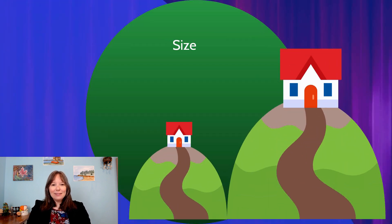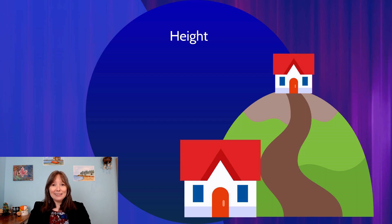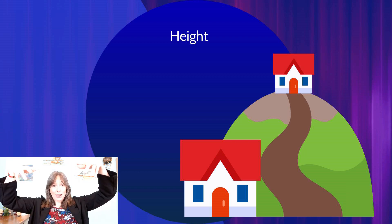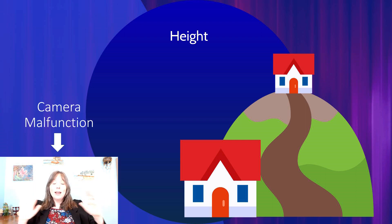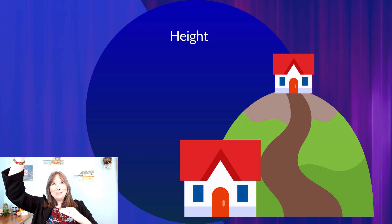When binocular cues aren't working well, monocular cues — which only need one eye — can help. One simple monocular cue is size: objects that appear smaller we tend to assume are further away. In an image, we'd assume the smaller hill and smaller house are further away, not doll-sized. A second monocular cue is height: objects that appear higher up in our visual field we tend to assume are further away — whether outside or in a large lecture hall.